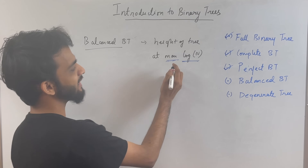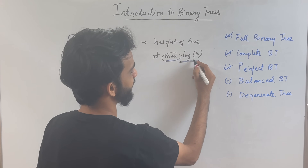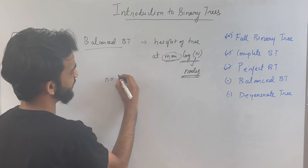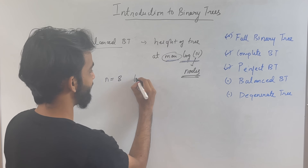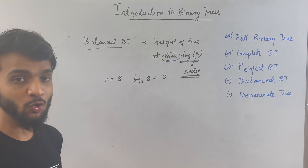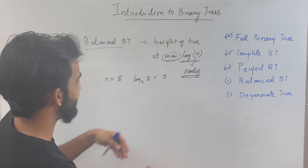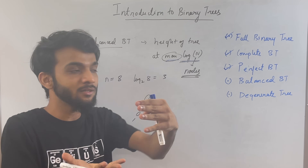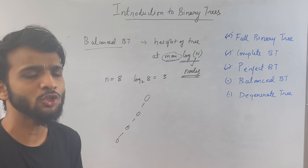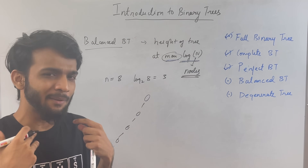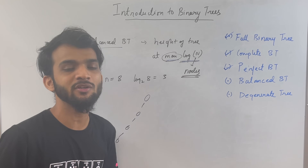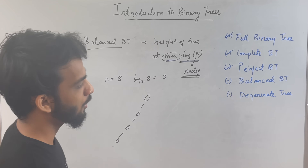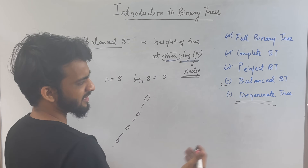The next one is the balanced binary tree. It states the height can be at a maximum of log n, where n is the number of nodes. For example, if n equals eight, log base 2 of 8 is around three, so you cannot have a height greater than three. This is done to efficiently search and improve time complexity. We will cover this more in binary search trees.